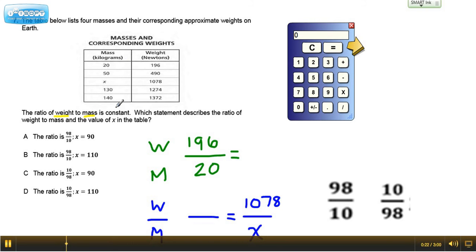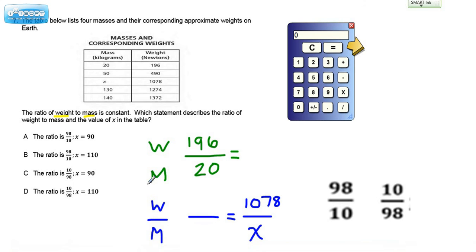Alright, so the first thing we have to pay attention to is they're talking about a weight to mass ratio. So that means the numbers are backwards here. The weight is on this side of the table. The mass is over here.